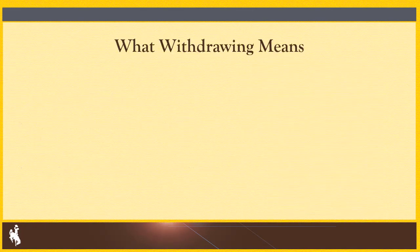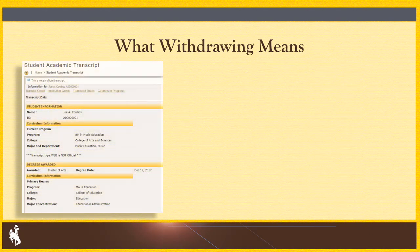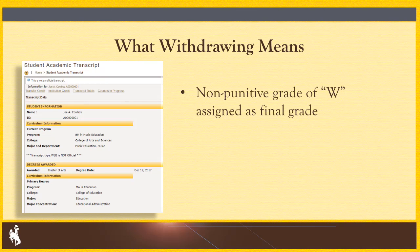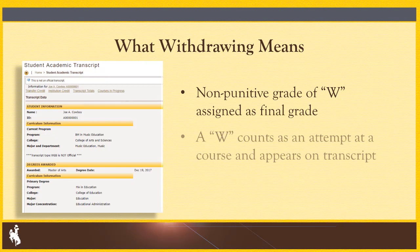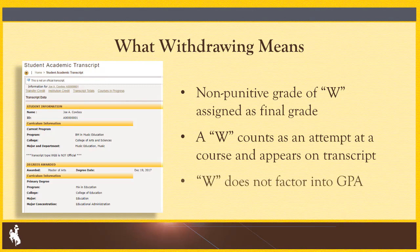After the add-drop period, students can still remove a class from their schedule by withdrawing. Withdrawing means that a non-punitive grade of W is assigned as the final grade for the class. Unlike a dropped class, a W does count as an attempt at a course and will be displayed on the transcript. However, it does not factor into a student's GPA.